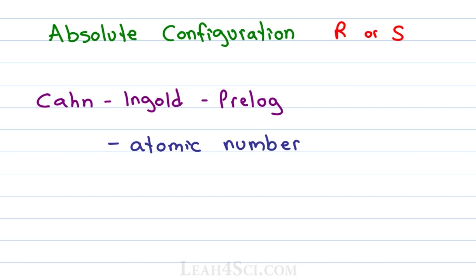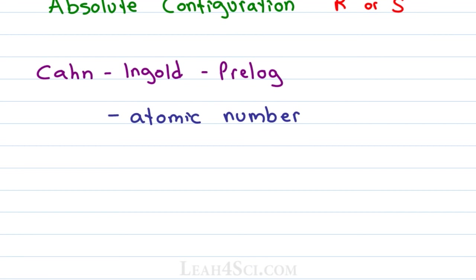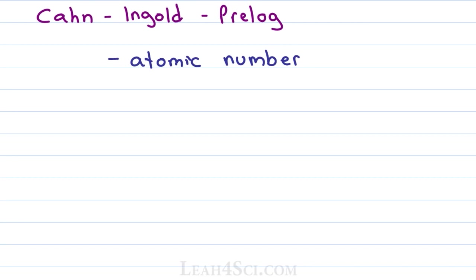This is where a lot of students get confused so once again, the atomic number of the atom directly attached to that central carbon, that chiral carbon. So you get a chiral molecule, you open your periodic table, you waste a good few seconds looking for the atoms, don't do that.